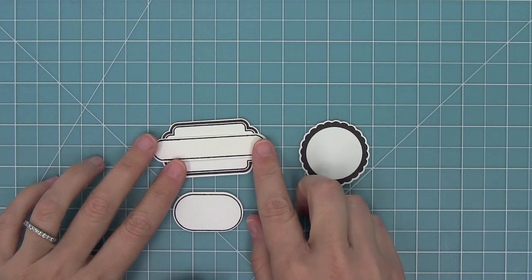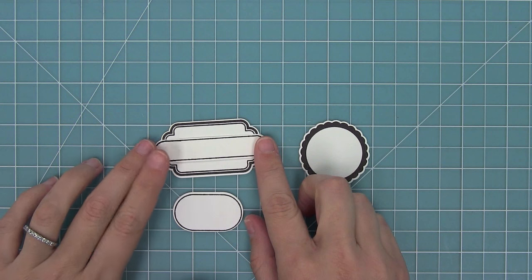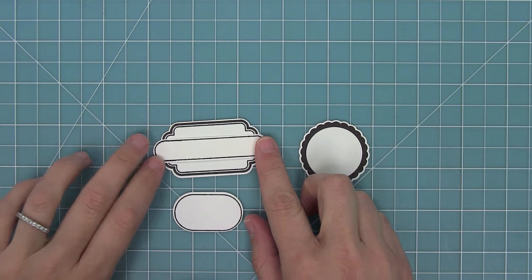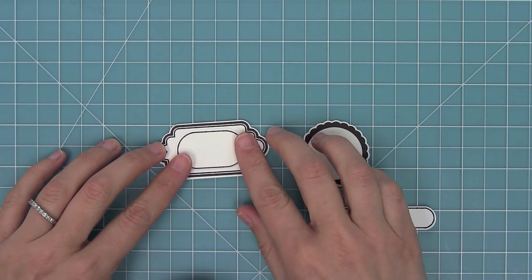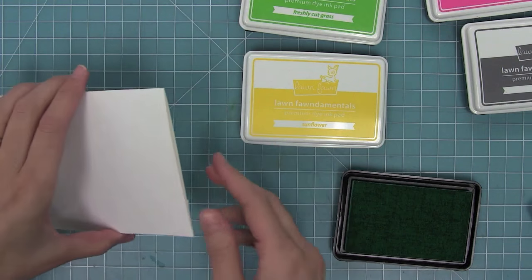Now this one was sized perfectly to layer on top of that larger label there, which I think is a really cool way to use it. And then the other label fits perfectly inside. So these are really great for layering and creating some really cool looks.